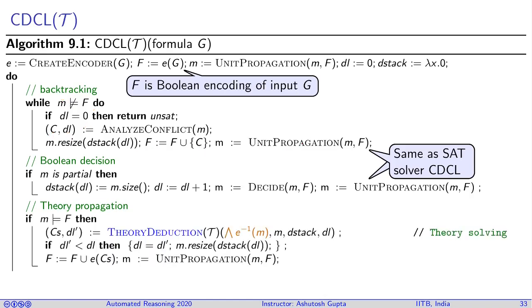Now let's look at the new part, which is due to the presence of the theory. Suppose the model satisfies your formula F. Then what do you do? You check if your model is good with respect to the theory. You reverse encode the model, take the conjunction, and send this conjunction to your theory deduction.